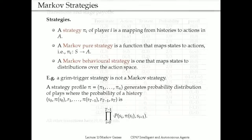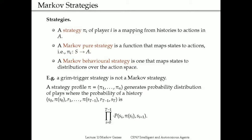Once we've defined the game model, we need to capture the agents' behaviors using the notion of strategies. In the Markov decision process with one agent, strategy means the policy of the agent—given a particular state, the agent chooses what to do. Similarly here, a strategy pi_i for player i is a mapping from histories to actions. In particular, we care about strategies that give rise to a Markov random process—satisfying the Markov property—where the action of the player depends only on the current state, not on any other states in the history.